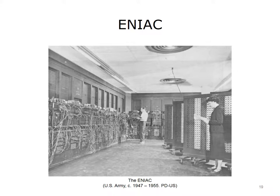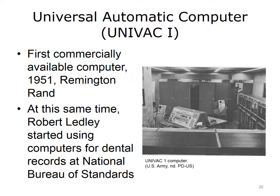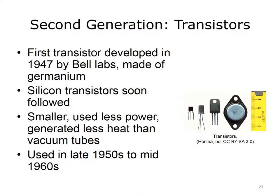The first commercially available computer was UNIVAC-1 — Universal Automatic Computer — released in 1951 by Remington Rand. Meanwhile, Robert Ledley started using computers for storing dental records at the National Bureau of Standards. This was the first use of computers for a medical informatics application. Second-generation computers used transistors. The first transistor was developed in 1947 in Bell Laboratories and was made of germanium; silicon transistors soon followed.